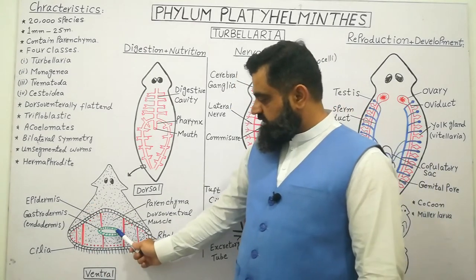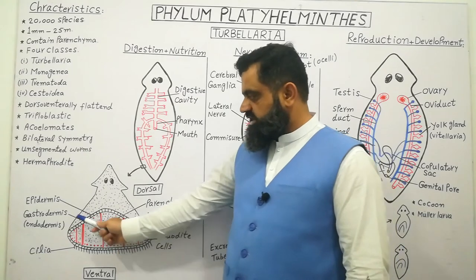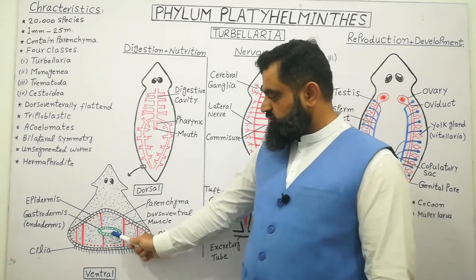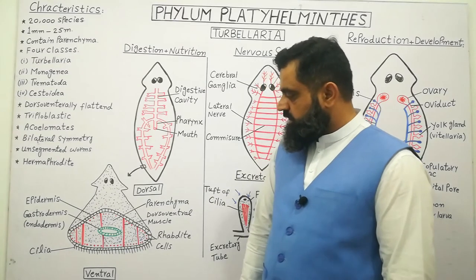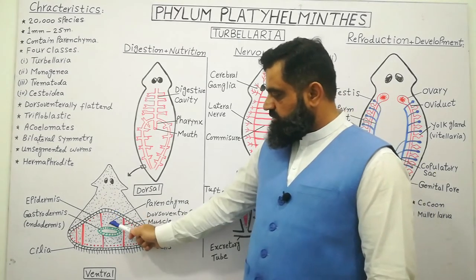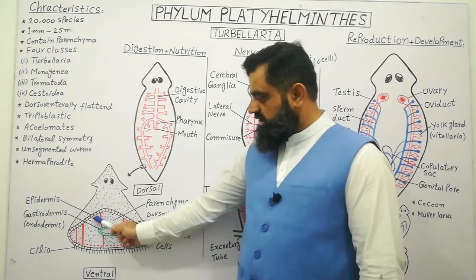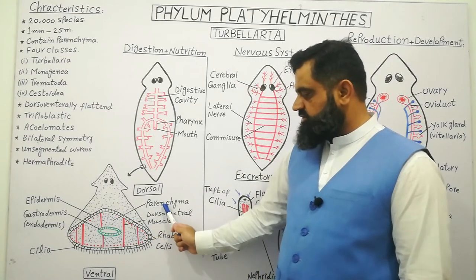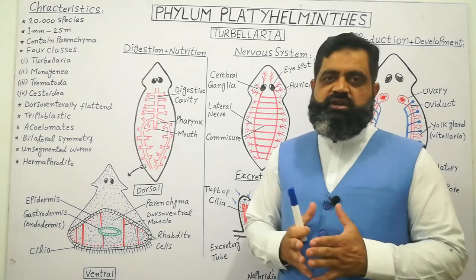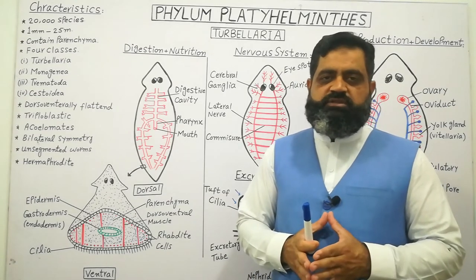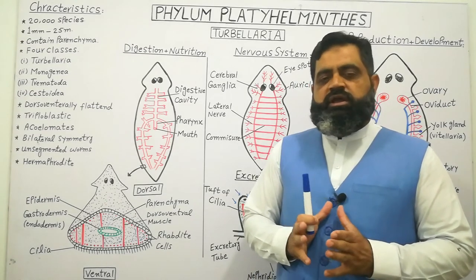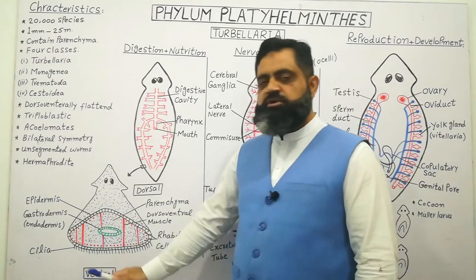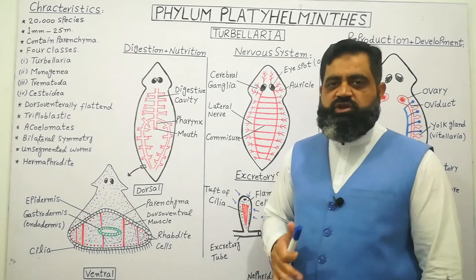The innermost layer, shown in green in the diagram, is the gastrodermis, also known as endodermis. This gastrodermis contains the gastric cavity. In between the ectoderm and endoderm there is a space filled by an acellular material known as parenchyma. This is the third layer, which is why we call these animals triploblastic: epidermis, endodermis, and parenchyma. These animals do not have a body cavity, which is why they are called acoelomates.